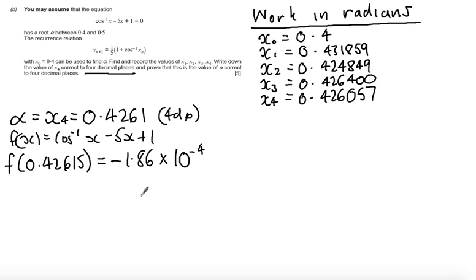We also want to evaluate the lower bound for this value. So the lower bound would be 0.42605. When we evaluate that in our function f of x, what we should come out with is 4.24 times 10 to the minus 4.